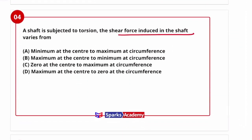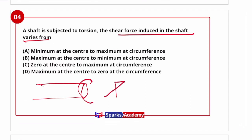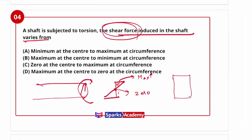Next question: when a shaft is subjected to torsion, the shear stress induced varies along the radial distance. At the midpoint (center) it is zero and at the circumference it is maximum. Note: for a rectangular beam in bending the shear stress distribution is parabolic — don't confuse it with torsion. The answer is zero at center and maximum at circumference.